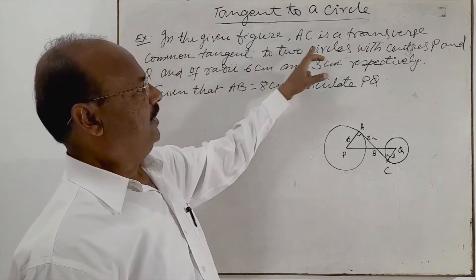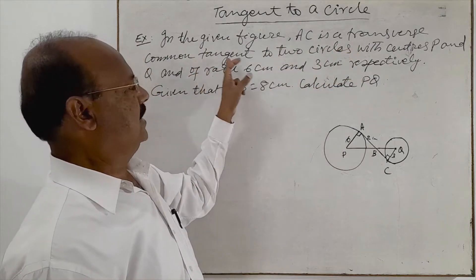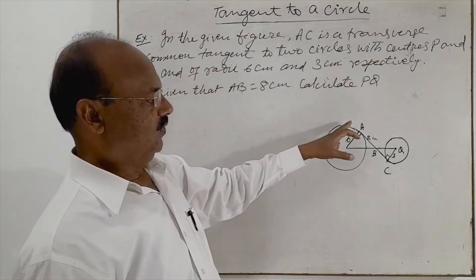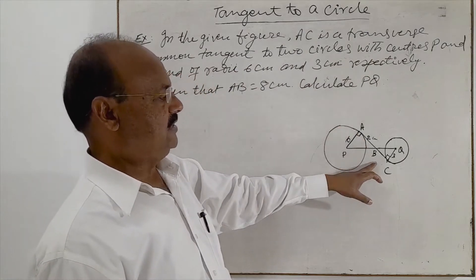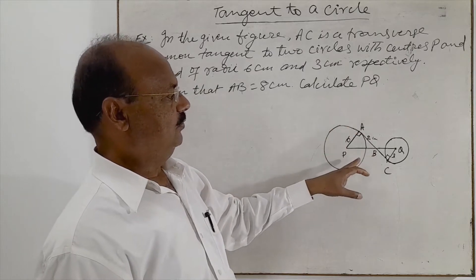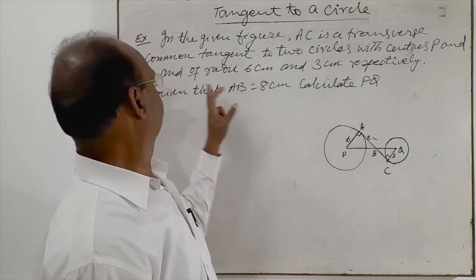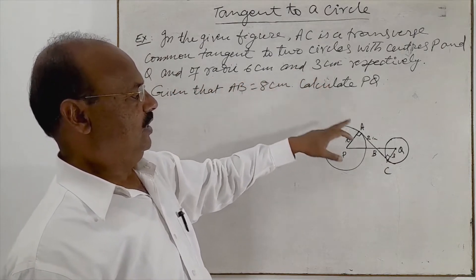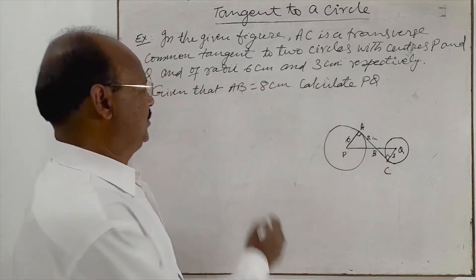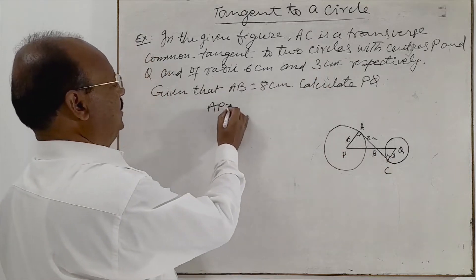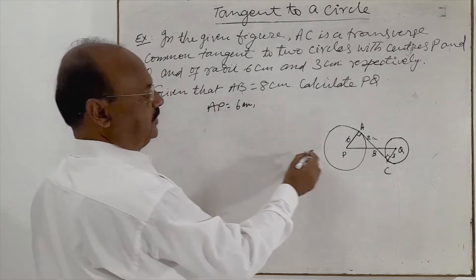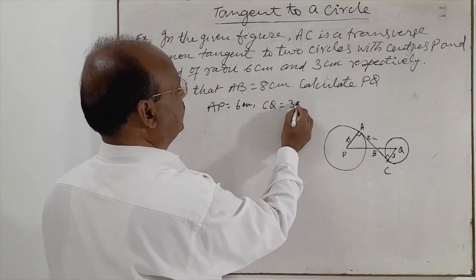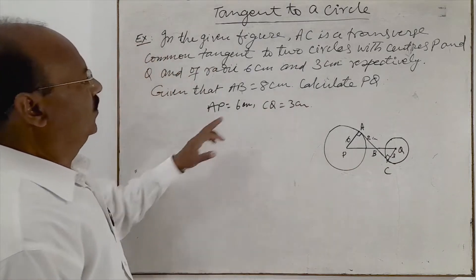In the given figure, AC is a transverse tangent to two circles with centers P and Q, and of radii 6 cm and 3 cm. It means AP is here 6 cm and CQ is 3 cm respectively.